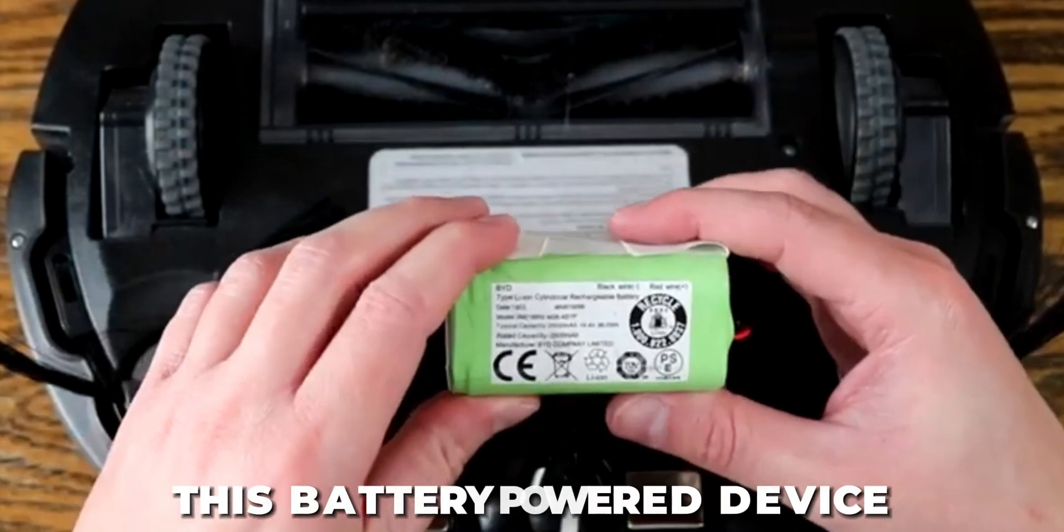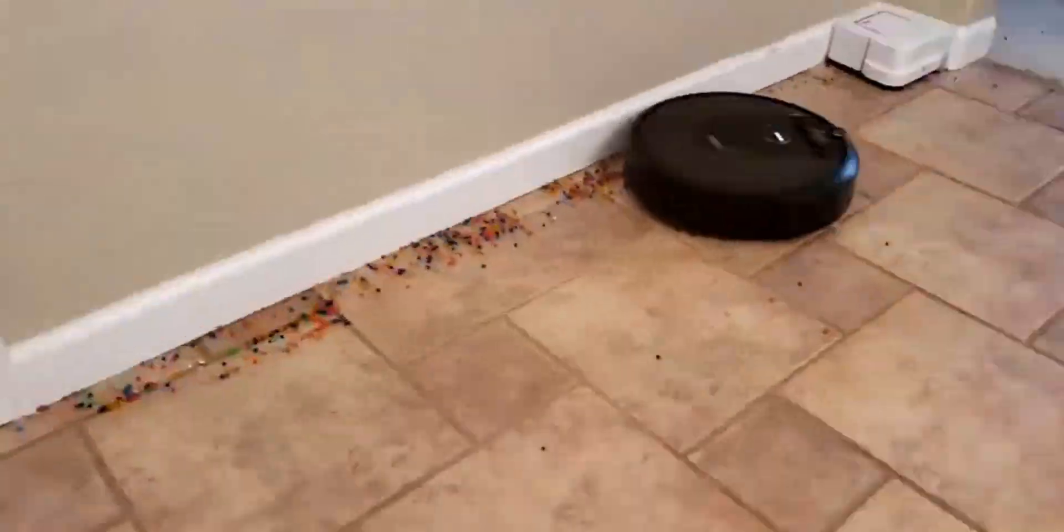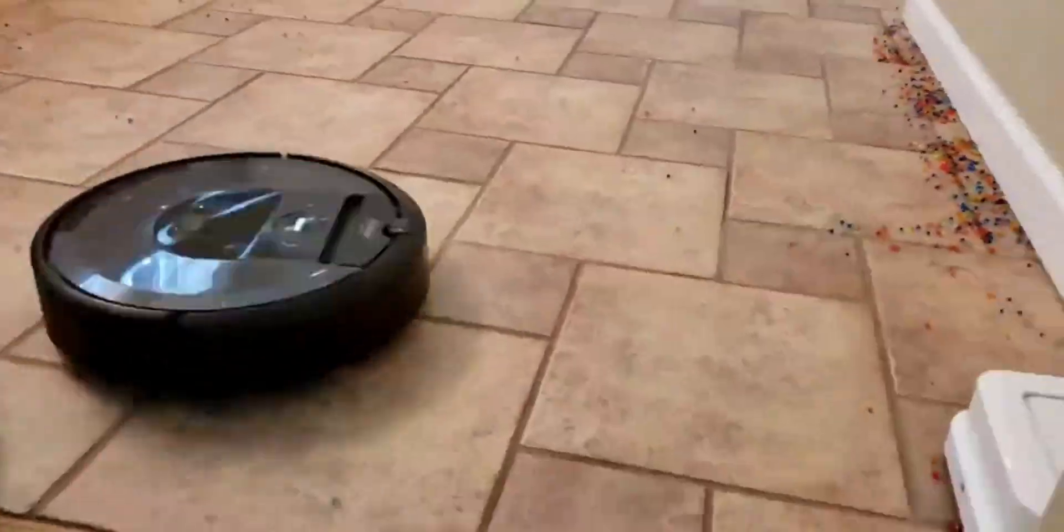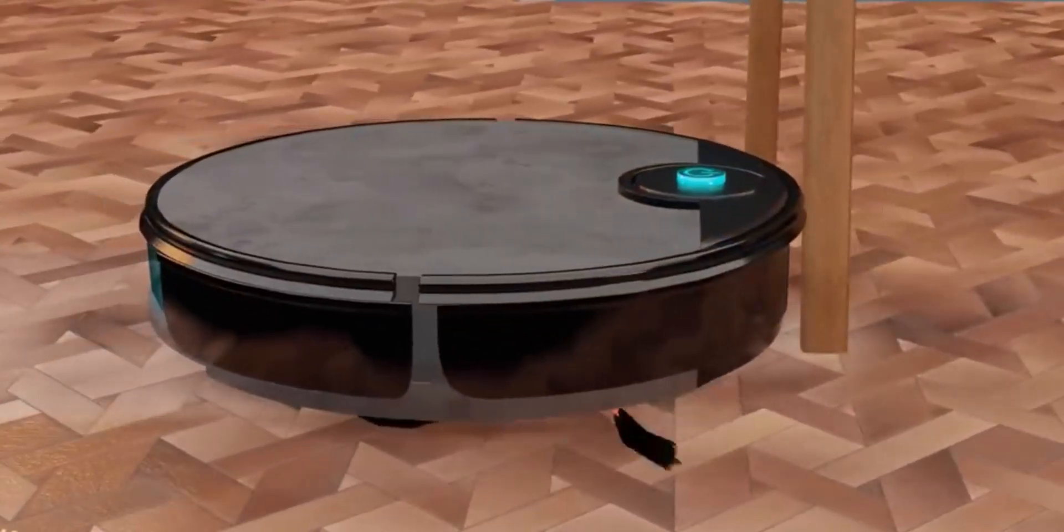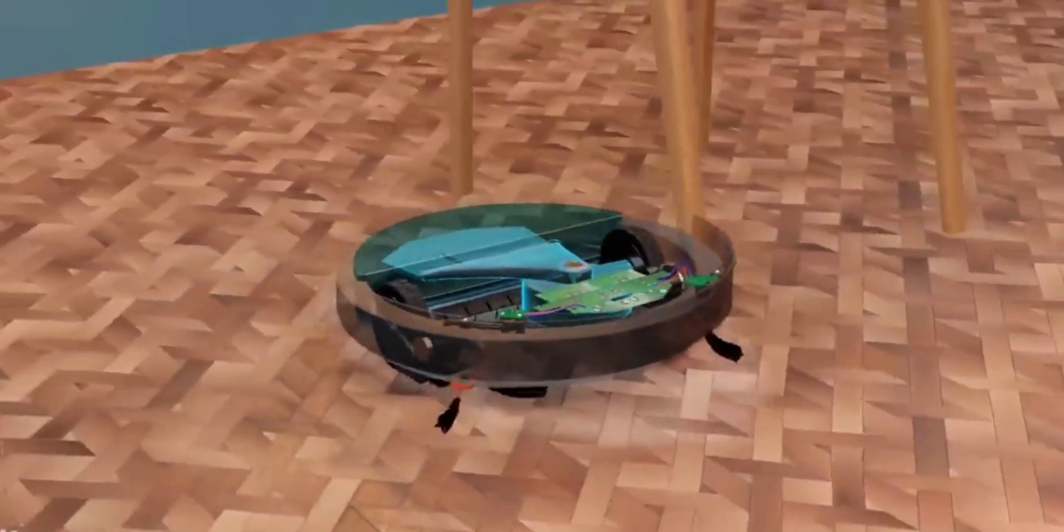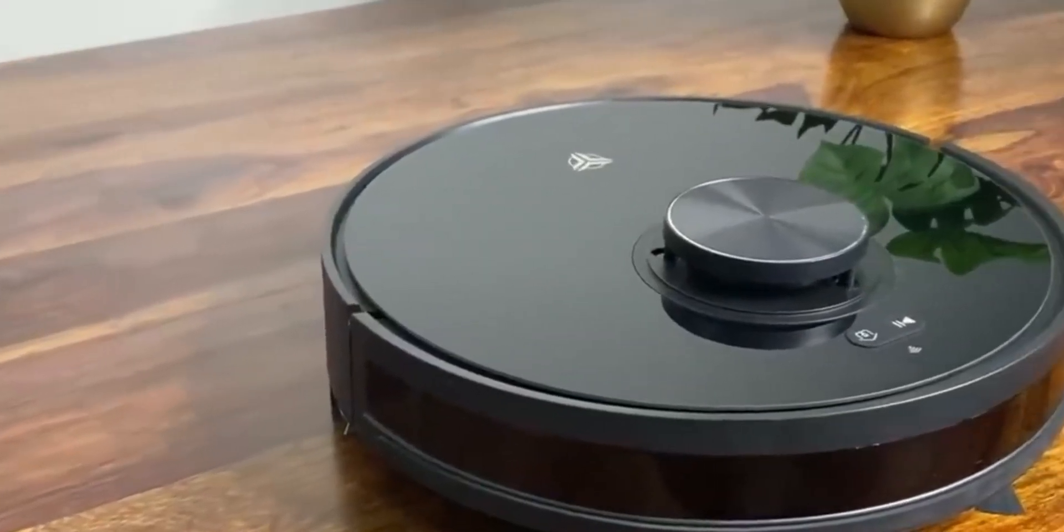At this point, this battery-powered device is ready to start cleaning the room. This cleaning machine is stuck though. The robot must be able to find the chair and change its path. Adding intelligence to this machine is the first step towards turning it into a robot.